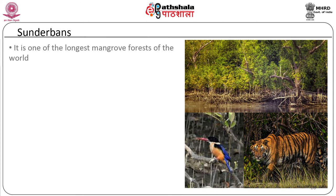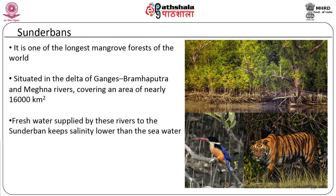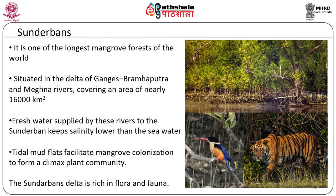The Sundarbans is one of the longest mangrove forests of the world. It is situated in the delta of the Ganges, Brahmaputra and Meghna rivers, covering an area of nearly 16,000 square kilometers. Interestingly, 60% of this is in Bangladesh and only 40% is in India. It experiences a warm humid climate and annual rainfall between 1600 to 1800 millimeters. The rainfall is received from June to October during the southwest monsoon. The fresh water of the Sundarbans is supplied by the Ganges and Brahmaputra throughout the year. That is why the salinity of the Sundarbans is lower than sea water. The Sundarbans delta is rich in flora and fauna. It is the home of a large number of invertebrates, insects, fishes, mollusks, crustaceans, monkeys and reptiles, and is the only habitat for the endangered Royal Bengal Tiger.